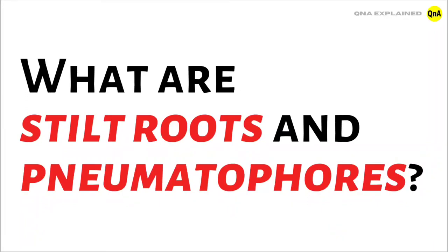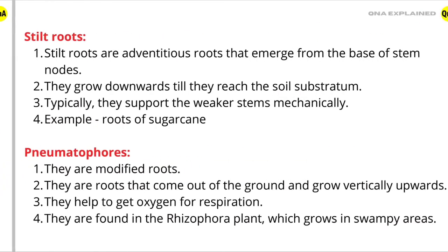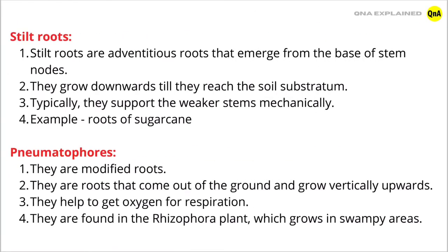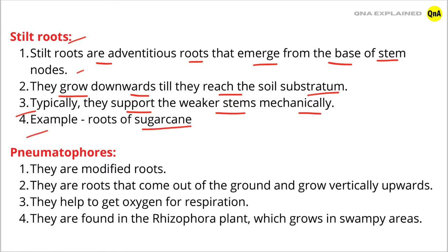What are stilt roots and pneumatophores? Stilt roots are adventurous roots that emerge from the base of stem nodes. They grow downwards till they reach the soil substratum. Typically, they support the weaker stems mechanically. Example: roots of sugarcane.